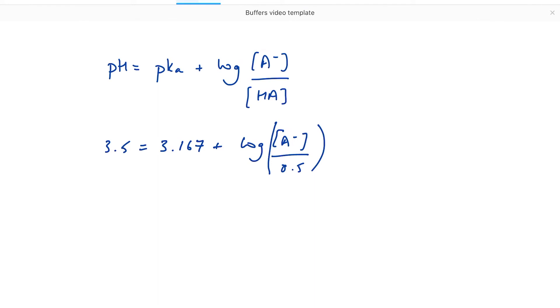I need to separate out the right-hand side of this expression a little further. So pH equals pKa plus log A- minus log of 0.5.